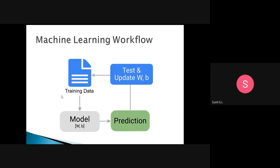This is the diagrammatic view: we have training data, which is applied to the model to train it. After the model is trained, we predict the result. Then we test and update — that is fine-tuning. The updated result feeds back as training data, so the model is fine-tuned every time. This is the machine learning workflow model.